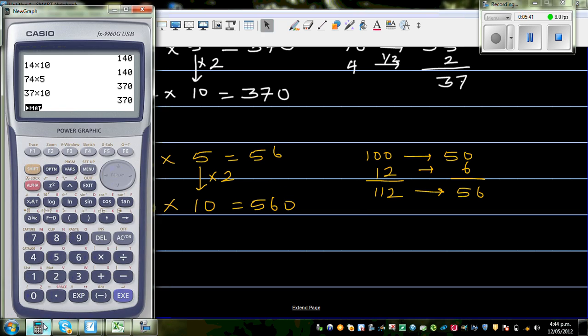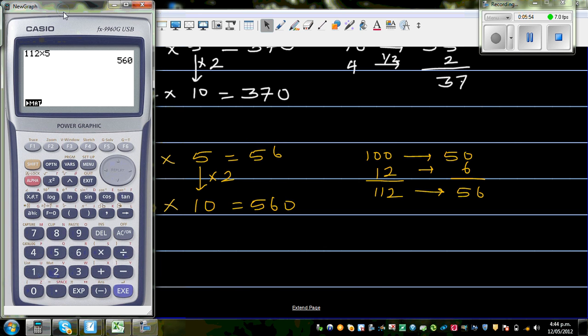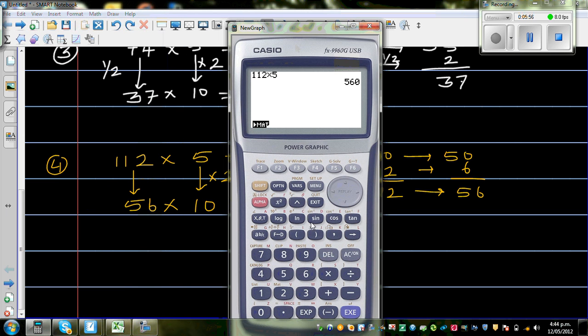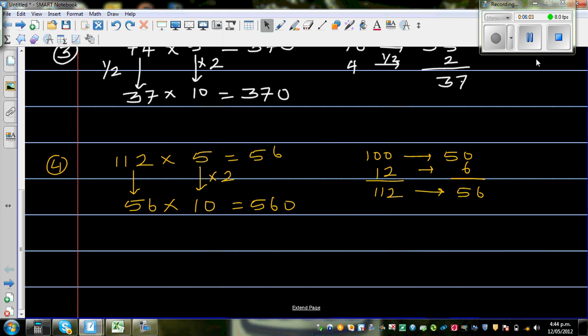So let's check that on the calculator. 112 times 5 is 560. And what was the other number? So this was 56 times 10. 56 times 10, you don't need to calculate. That's also 560.